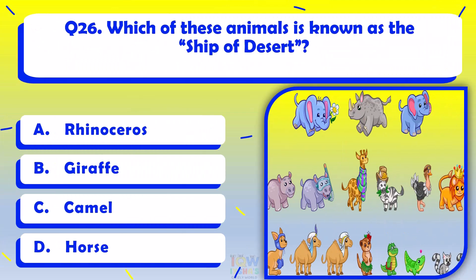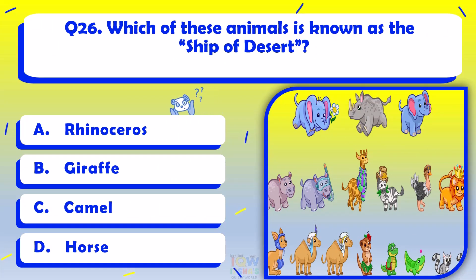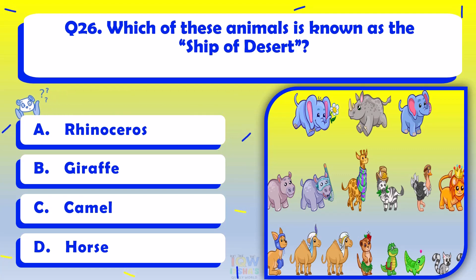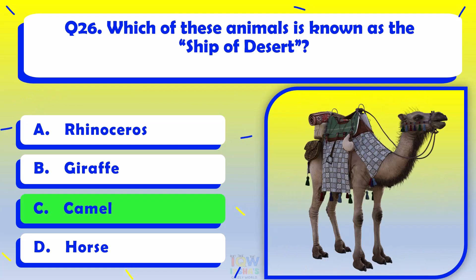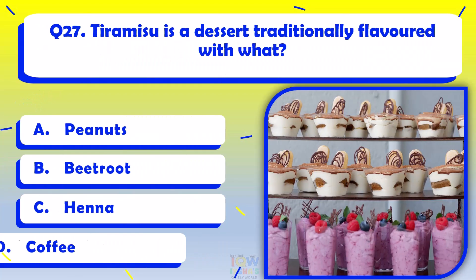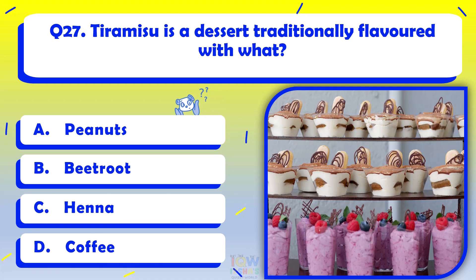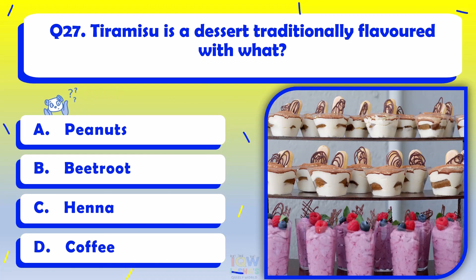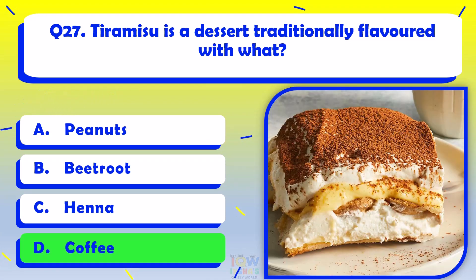Which of these animals is known as the ship of the desert? Camel. Tiramisu is a dessert traditionally flavored with what? Coffee.